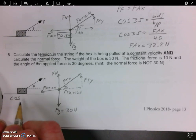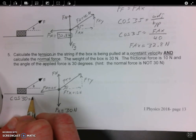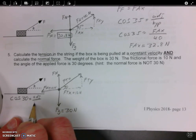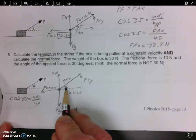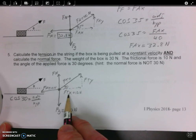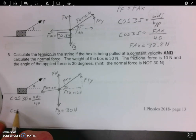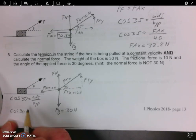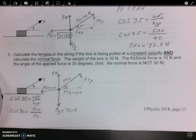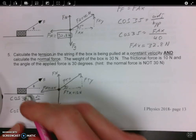We can do cosine of 30 equals adjacent over hypotenuse. And what's adjacent to this 30 degrees is Ftx. So cosine 30 equals Ftx over Ft. And of course, Ftx is 10 newtons.